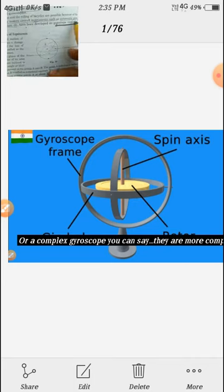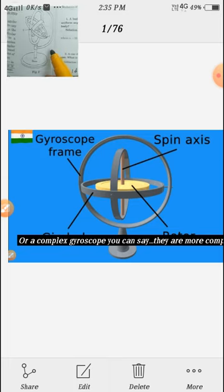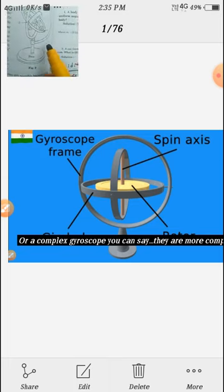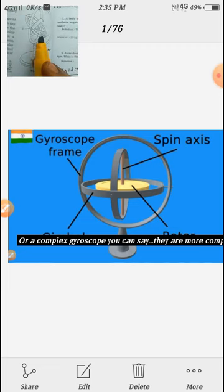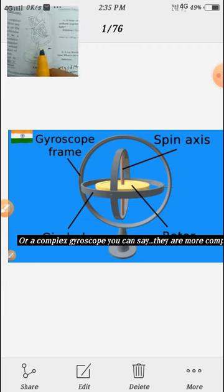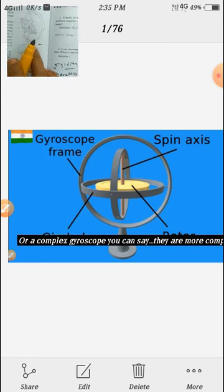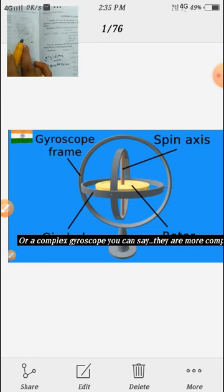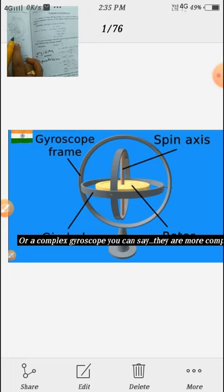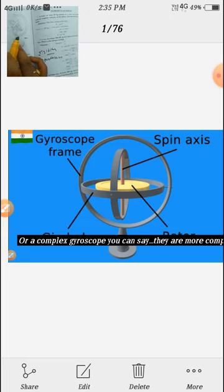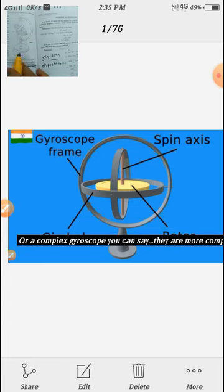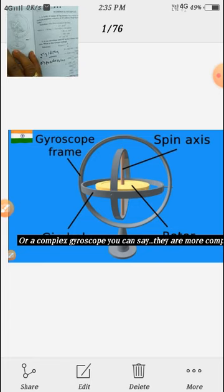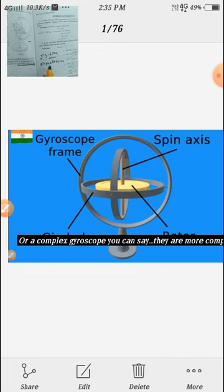The gyroscope has a frame and spin axis which rotates. Gyroscopes are used as stabilizers in boats and aeroplanes, and to show directions in gyro compass. The main properties are rigidity and precision.